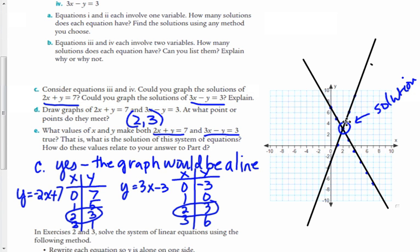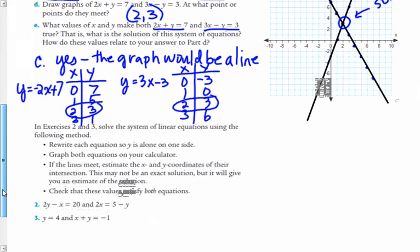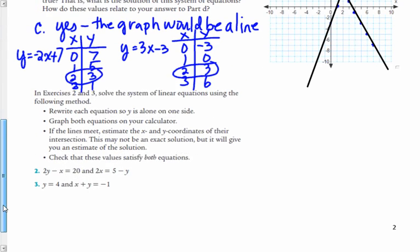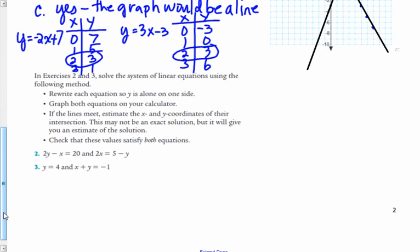And you can find that by making a graph and finding where they intersect. Or you can also make a table and find what values they have in common. Okay. The second one here, we're going to solve this system of linear equations. First, we're going to rewrite each of these equations so that y is alone on one side. So we're going to do number 2 here.